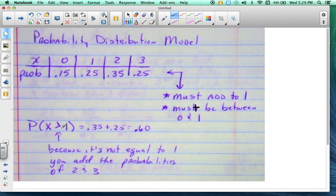Now, probability that x is greater than 1 right here. You simply, the ones that are greater than 1 are these two, so you just add them together, and that's 0.60, and because it's not equal to 1, you add the probabilities of 2 and 3, so just what I was saying. Let's go to the next one.